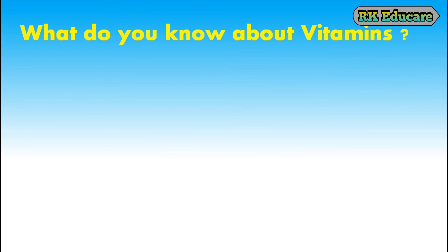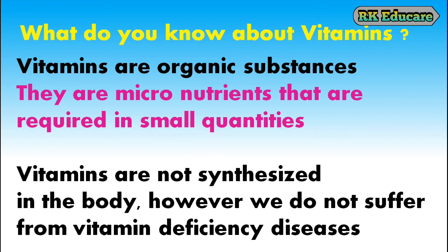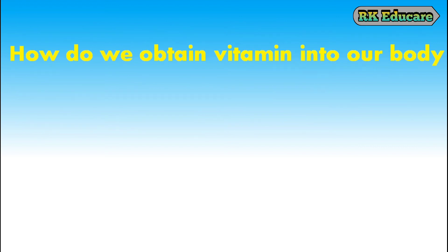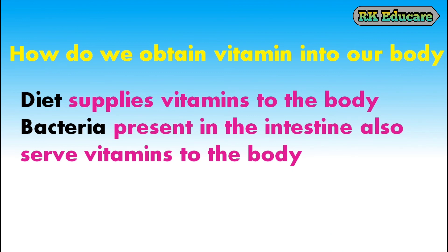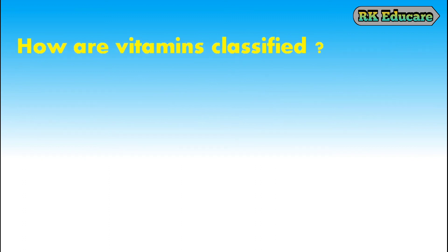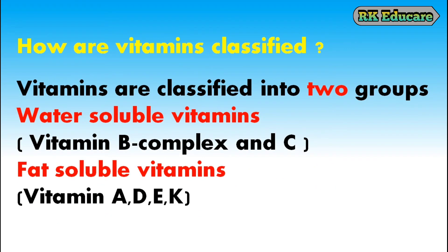What do you know about vitamins? Vitamins are organic substances. They are micronutrients required in smaller quantities. Vitamins are not synthesized in the body; however, diet supplies vitamins to the body and bacteria present in the intestine also serve vitamins to the body. Vitamins are classified into two groups: water-soluble vitamins and fat-soluble vitamins. Vitamin B complex and C are water-soluble vitamins. Vitamins A, D, E and K are fat-soluble vitamins.